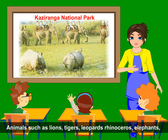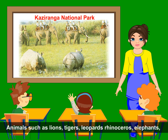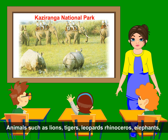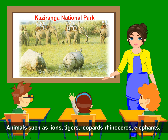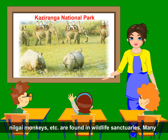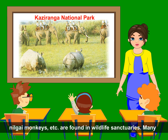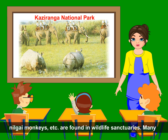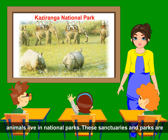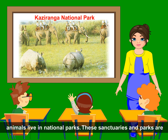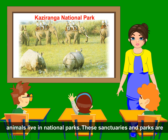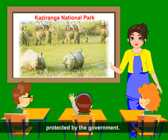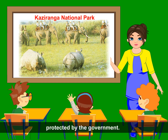Animals such as lions, tigers, leopards, rhinoceros, elephants, neelgai, monkeys etc. are found in wildlife sanctuaries. Many animals live in national parks. These sanctuaries and parks are protected by the government.